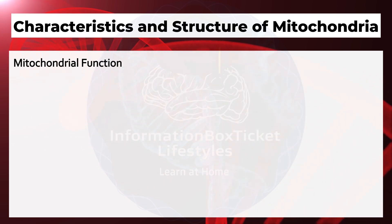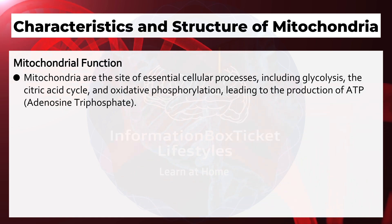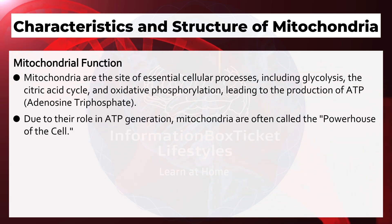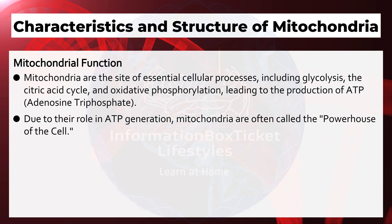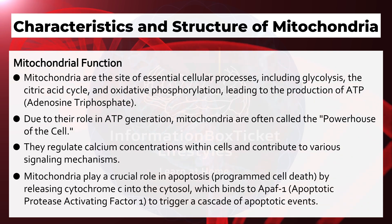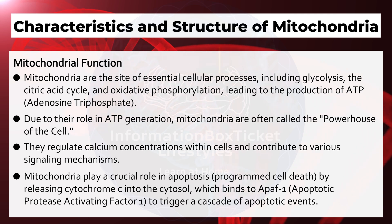The matrix also contains mitochondrial DNA, ribosomes, and enzymes required for cellular respiration. Mitochondria are the site of essential cellular processes, including glycolysis, the citric acid cycle, and oxidative phosphorylation, leading to the production of ATP (adenosine triphosphate). Due to their role in ATP generation, mitochondria are often called the powerhouse of the cell. They regulate calcium concentrations within cells and contribute to various signaling mechanisms. Mitochondria also play a crucial role in apoptosis — programmed cell death — by releasing cytochrome C into the cytosol, which binds to apoptotic protease activating factor 1 to trigger a cascade of apoptotic events.